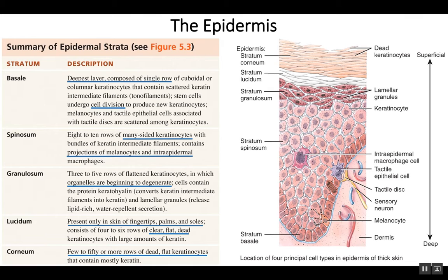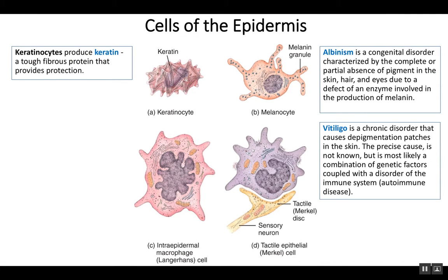Those are the layers of the epidermis. We should know each layer and what it's known for, the order of the layers, and the different cell types in the epidermis. The keratinocyte makes up about 90% of the epidermis. There are also a few melanocytes, which produce melanin — the pigmentation in your skin. This pigmentation helps prevent UV damage to the cells.